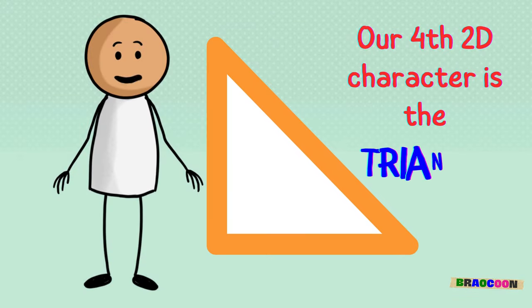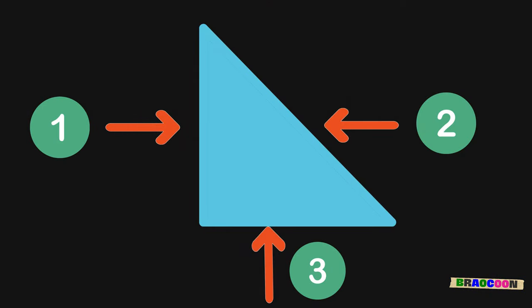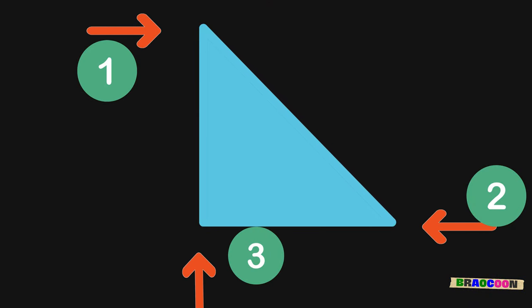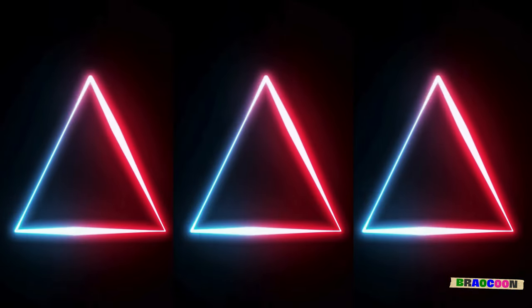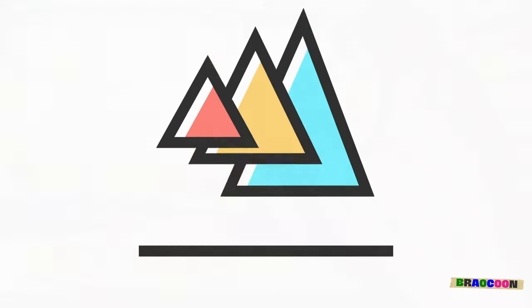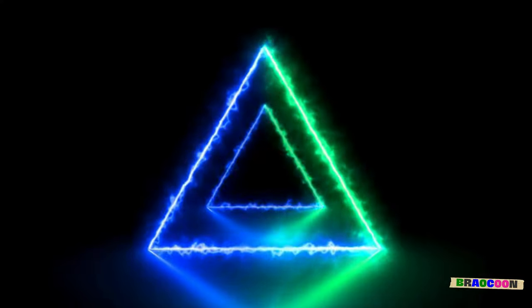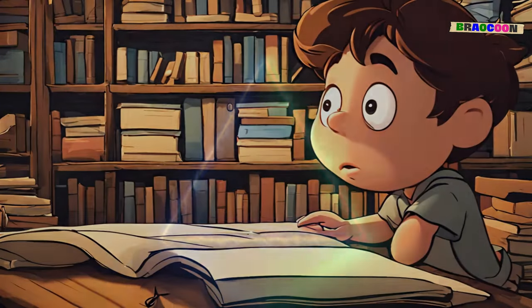Our fourth 2D character is the triangle. A triangle has three sides and three corners. It is also called the pointy shape. A triangle is like the slice of pizza you enjoy eating. Triangles can look different, based on how long their sides are, or how wide their angles are. Always remember that.